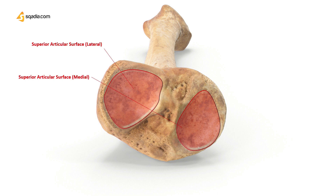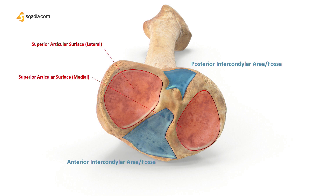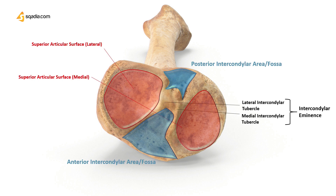In between the two condyles is the intercondylar fossa, or area, which contains the intercondylar eminence. This eminence divides the intercondylar area into anterior and posterior portions.